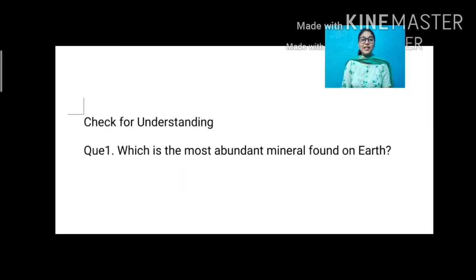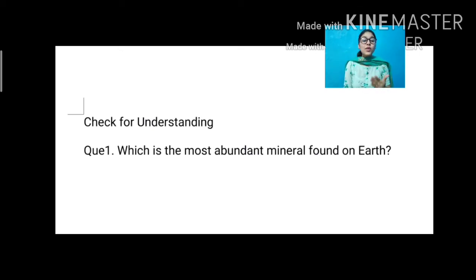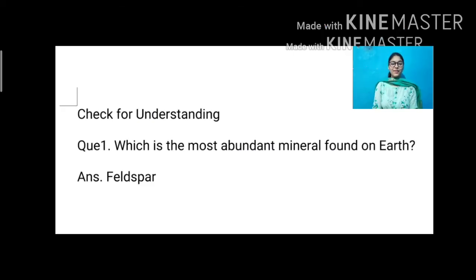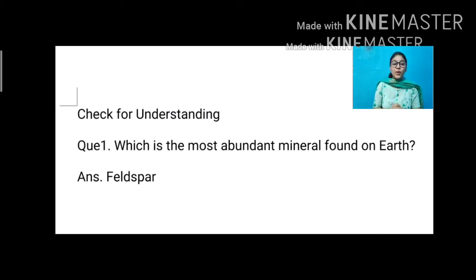Let us check how much you have learnt. The first question: which is the most abundant mineral found on earth? We have revised this in today's class — the answer is feldspar. Feldspar is the most abundant mineral found on earth.